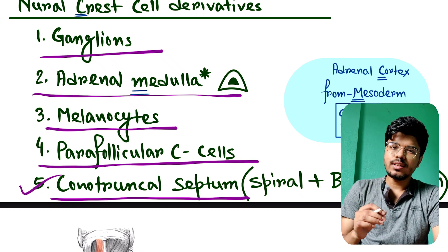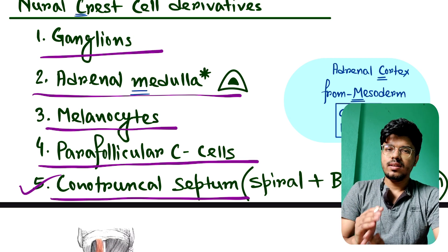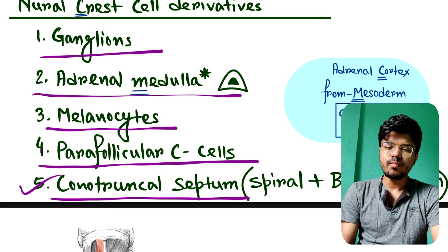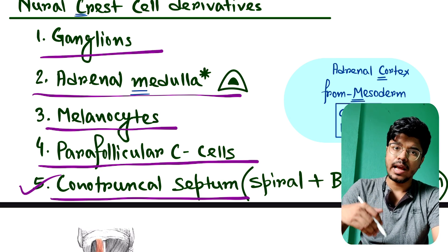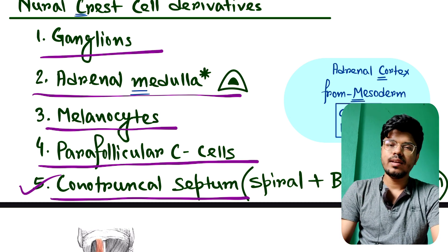Instead of spiral, if the conotruncal septum is straight, then there is TGA, which means transposition of great arteries. If the conotruncal septum is anteriorly placed, then there is TOF, tetralogy of Fallot. If there is absence of conotruncal septum, there is patent truncus arteriosus.